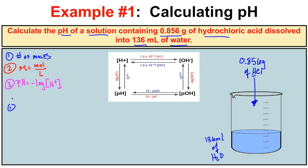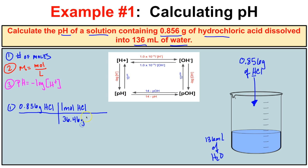In step one we have 0.856 grams of HCl. We want to figure out how many moles we have. We know one mole of HCl is 36.46 grams. So 0.856 divided by 36.46 gives us 0.0235 moles of HCl — this is how many moles we dissolved in this water.